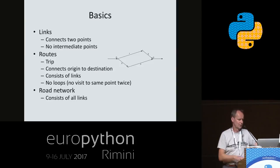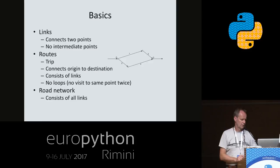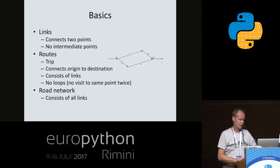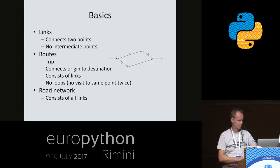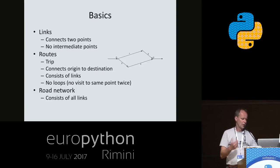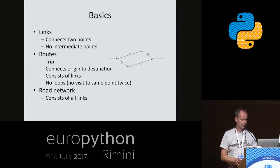A transport network is actually a graph. We can use the individual streets, cut them up into links, and then we have the edges of our graph. A route starts somewhere at an origin and it ends at a destination. We don't expect people to go the shortest path through our network, and we don't want to have any loops in our network. So every route is a simple route.